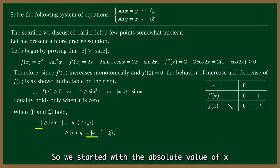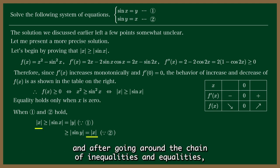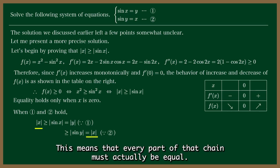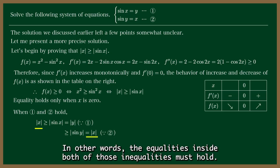So we started with the absolute value of x and went around the chain of inequalities and equalities, and ended up back at the absolute value of x. This means that every part of that chain must actually be equal.